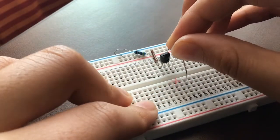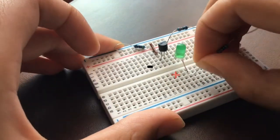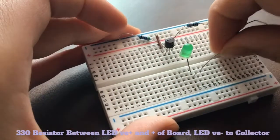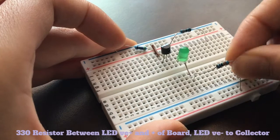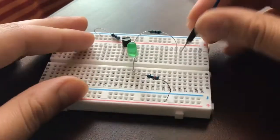Finally we want to take a LED and connect it between the transistor's collector or pin 1 and its positive on the other side of the breadboard. We connect a 330 ohm resistor between the positive of the LED and the positive rail of the breadboard.